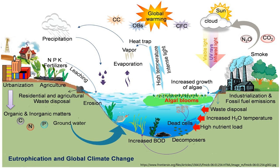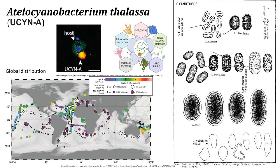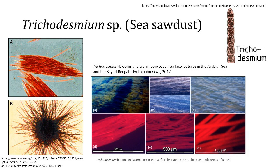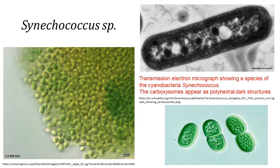Cyanobacteria are ubiquitous marine primary producers. The marine phytoplankton today contribute almost half of the Earth's total primary production. Only a few lineages of cyanobacteria colonize the open ocean, and among these, nitrogen-fixing cyanobacteria are particularly important because they exert a control on primary productivity and the export of organic carbon to the deep ocean by converting nitrogen gas into ammonia, which is later used to make amino acids and proteins.